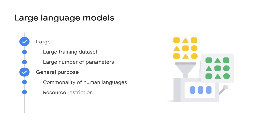General purpose means that the models are sufficient to solve common problems. Only certain organizations have the capability to train such large language models with huge datasets and a tremendous number of parameters. How about letting them create fundamental language models for others to use? This leads to the last point: pre-trained and fine-tuned, meaning to pre-train a large language model for a general purpose with a large dataset and then fine-tune it for specific aims with a much smaller dataset.